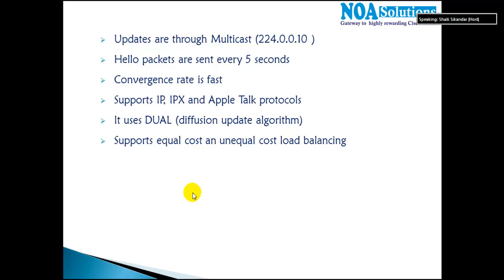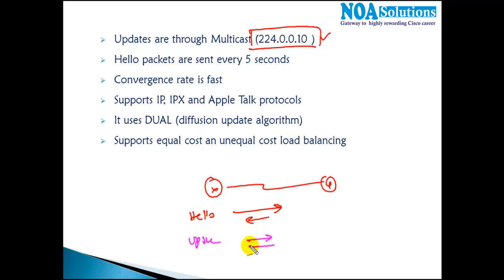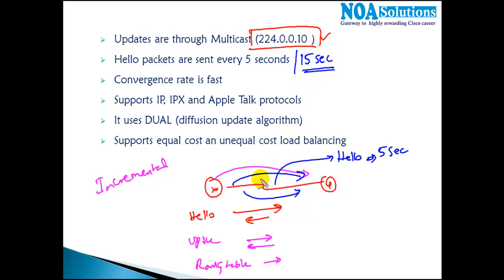After the initial convergence, updates are sent only when there is a change — this is called incremental updates. The multicast address used is 224.0.0.10 and all EIGRP routers listen on this address. The first step is sending and receiving hello messages; the second step is sending and receiving update and acknowledgement packets; and finally, the routing table is built. Periodically, the two routers continue to send and receive hello messages — these are keepalive messages to confirm whether a neighbor is up or not. If there is no hello received for 15 seconds (the dead time), the router removes that neighbor from the neighbor table and looks for an alternate route.